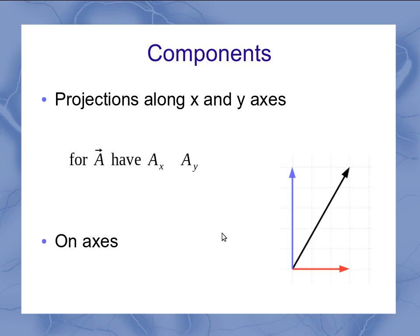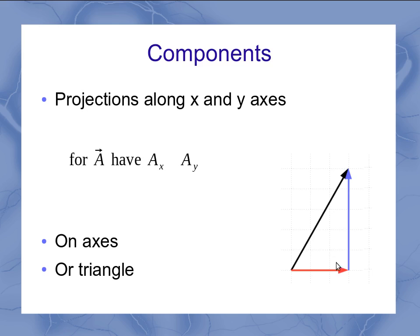Now, having it shown here along the axes is one way we can show the components, but it's not the only way. I can also move that a sub y vector over, same length, but now I'm representing it as a triangle.